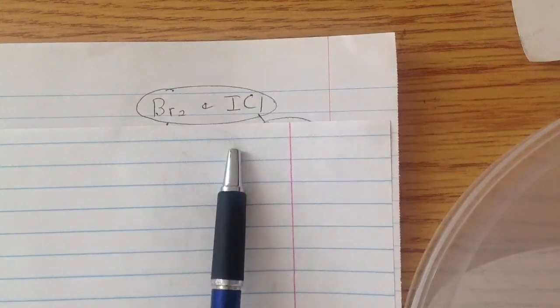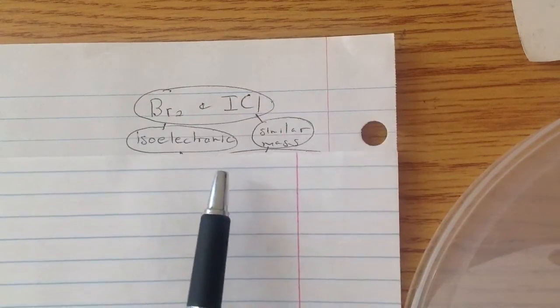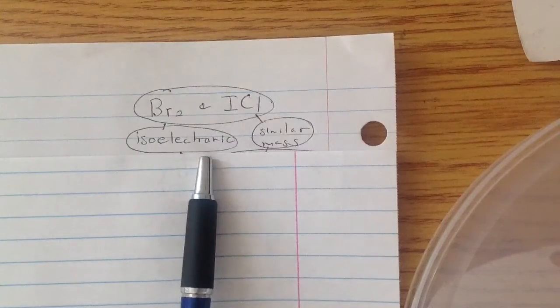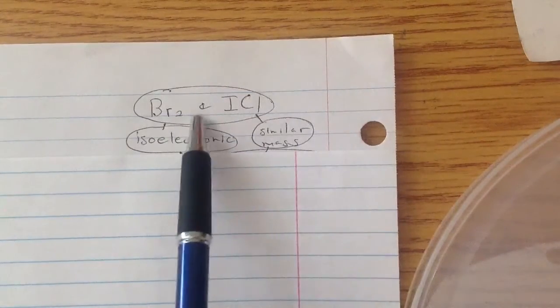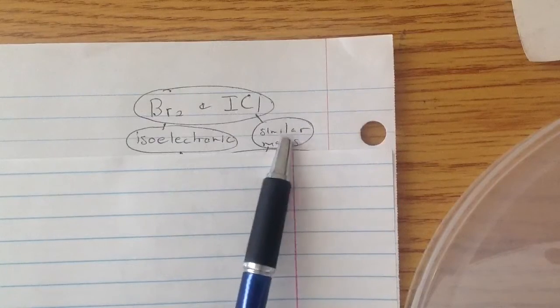For this problem, we have Br2 and ICl. Both of these are isoelectronic, meaning they have the same amount of electrons. They also have a similar mass.